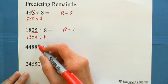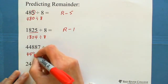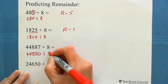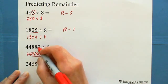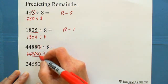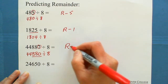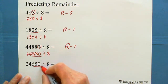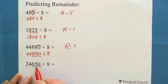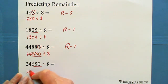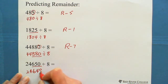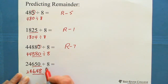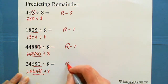For 44,887: 880 is divisible by 8, and 887 is 7 greater than 880, so the remainder is 7. For 650 divided by 8: the closest number divisible by 8 is 648, because 64 is divisible by 8 (8 times 8 equals 64). Since 650 is 2 more than 648, the remainder is 2.